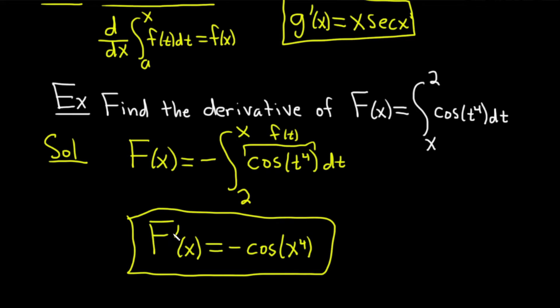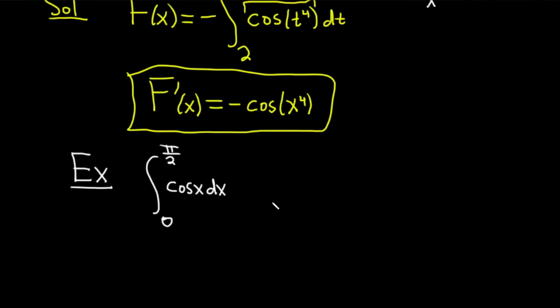All right, let's do something a little bit different. In this next example, we are going to integrate cosine x from 0 to π/2. So to do this, we're going to use the second part of the Fundamental Theorem of Calculus. So FTC, and this is part 2.